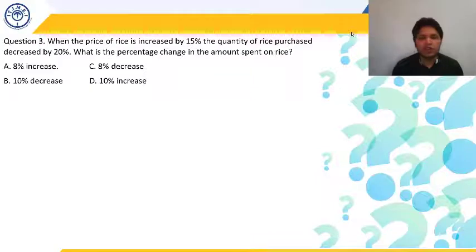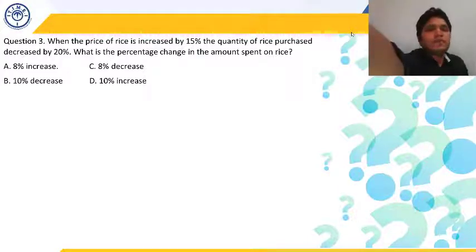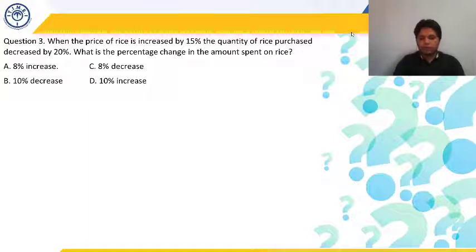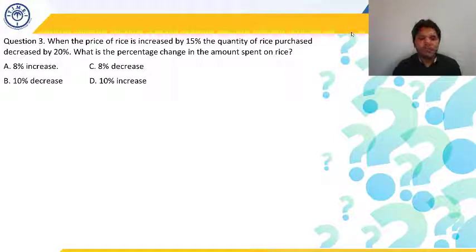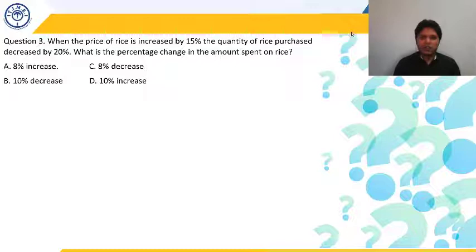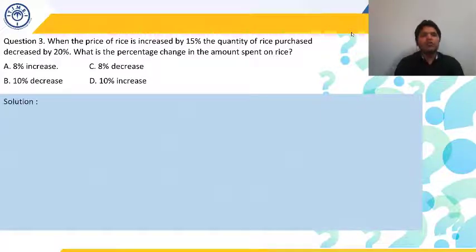Question 3: When the price of rice increased by 15%, the quantity of rice purchased decreased by 20%. What is the percentage change in the amount spent on rice? Amount spent = price per unit × quantity consumed. Let's first solve by traditional approach: assume price = Rs. 10 per kg, quantity purchased = 5 kg. Initial expenditure = 10 × 5 = Rs. 50.